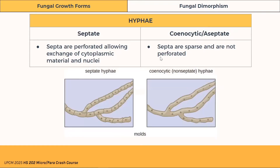Hyphae are only found in molds. There are two types of hyphae: septate or aseptate (also called coenocytic). Septate hyphae have walls — they look like bamboo. In septate hyphae, the septa are perforated, which allows the exchange of cytoplasmic material, and sometimes even nuclei. Aseptate hyphae have no septa and no visible walls.